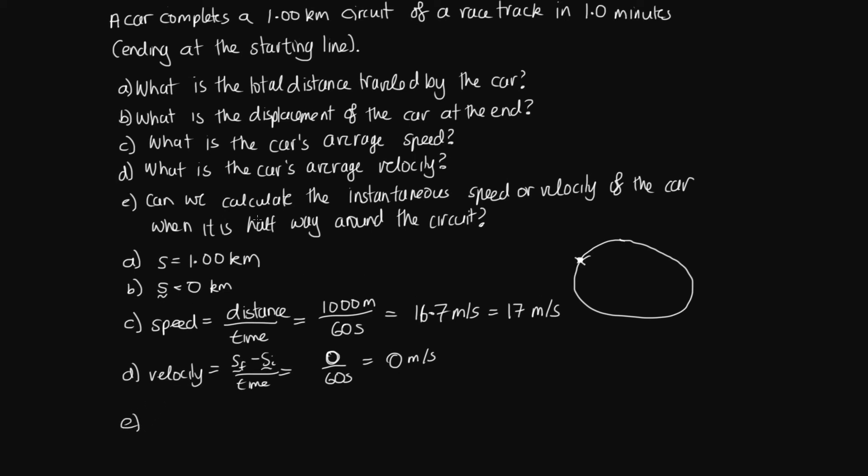And then part E, can we calculate the instantaneous speed or velocity of the car when it's halfway around the circuit? Well, we can't actually. So if the question told us that it travelled at a constant speed, then we'd know the instantaneous speed was the same as the average speed. But the question doesn't tell us that. It might go faster for the first half of the circuit than the second half of the circuit. So we can't conclude that.